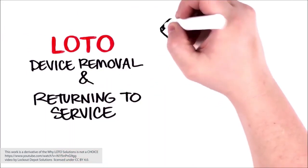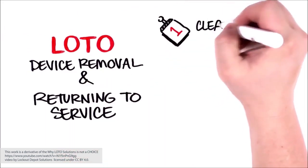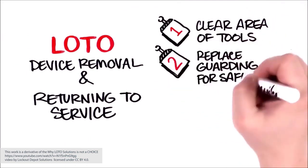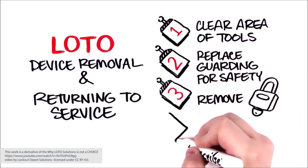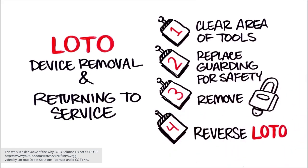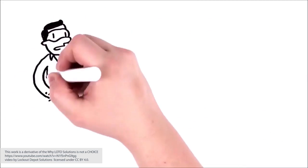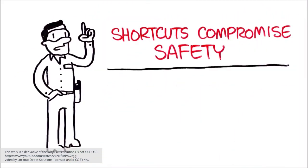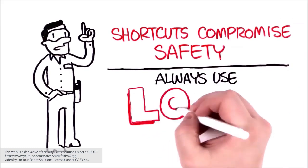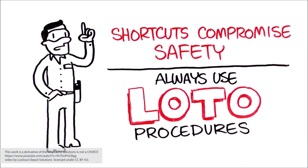Let's go over LOTO device removal and returning to service. When you're done with your service activity, clear your work area of equipment you used and replace all guarding so that it can be safely operated. Remove your locks and keys. Perform a reverse LOTO procedure. A serious reminder: shortcuts can compromise your safety. Always, every single time, fully and completely employ lockout tagout procedures to control hazardous energy and prevent an injury.